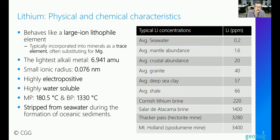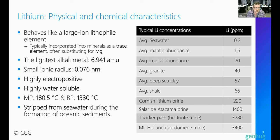Starting with fundamentals: you can consider lithium to behave kind of like a large iron lithophile. It actually has a very small ionic radius, but it behaves similar to most of those large iron lithophiles. It's pretty much incompatible within most silicate mineral structures and doesn't really like to be incorporated into those mineral lattice structures of silicates. When it does occur, it tends to be as a trace element and often substitutes for magnesium, as they have similar chemical and physical properties. Lithium is also the lightest metal in the periodic table, has a small ionic radius, and is highly electropositive.